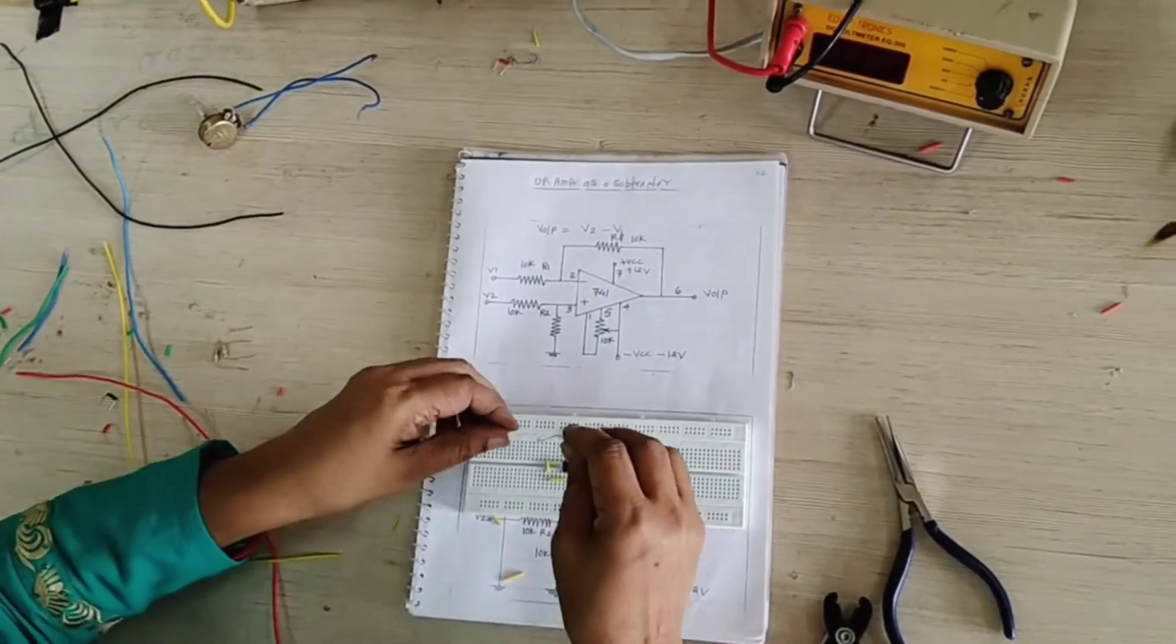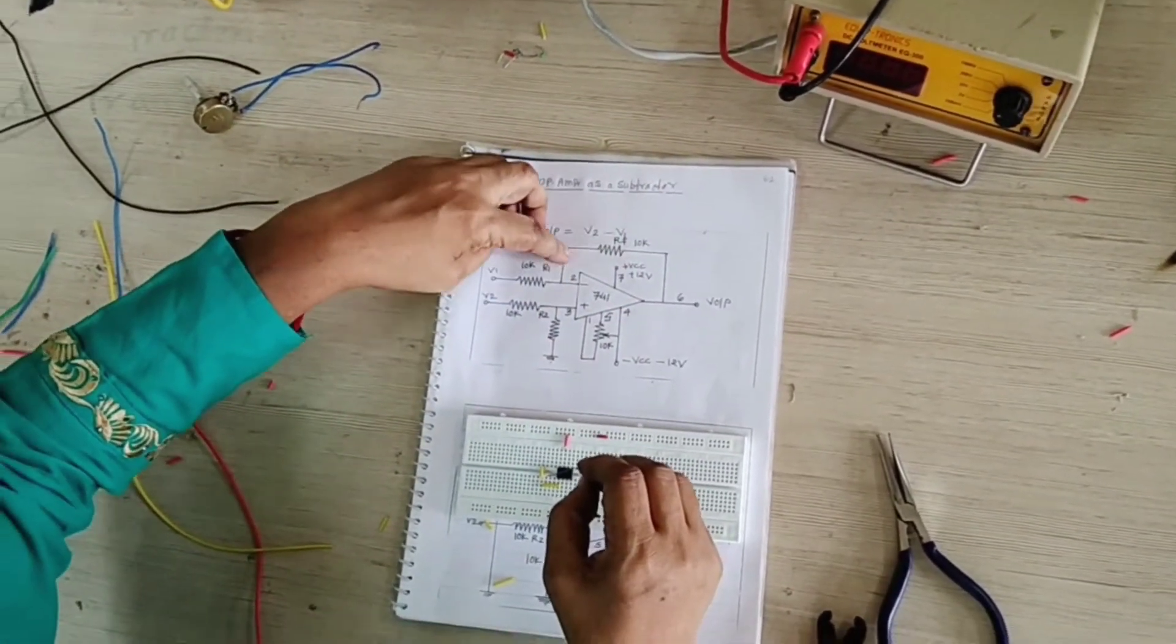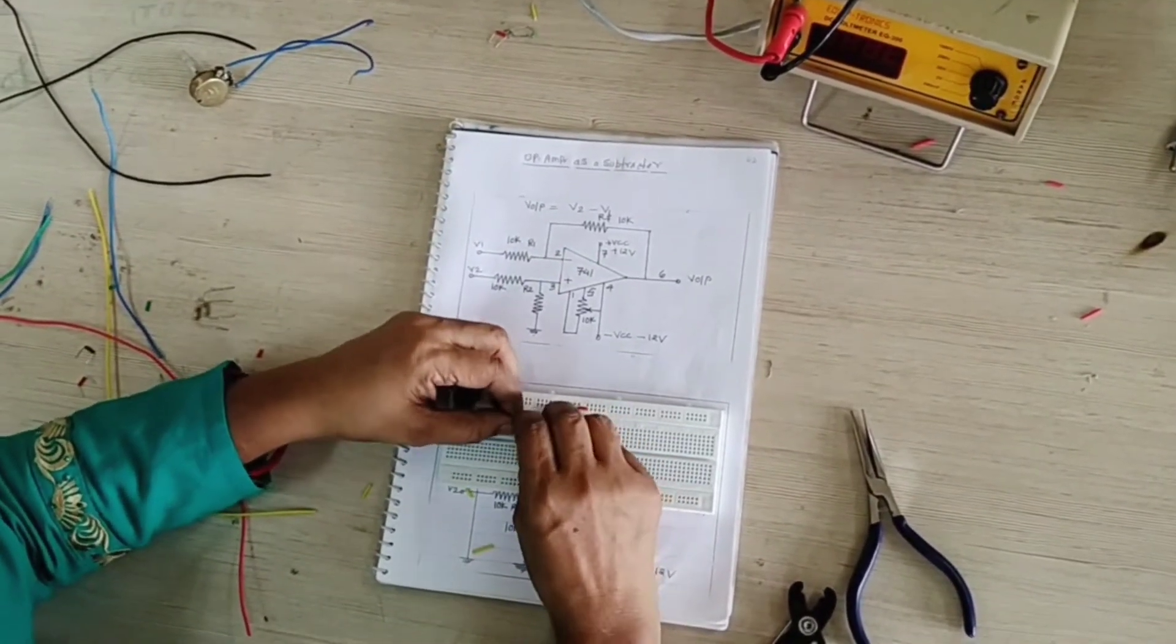This is your feedback resistor. Our feedback resistor pin number 2 to pin number 6. This is your 6 and this is your 2.